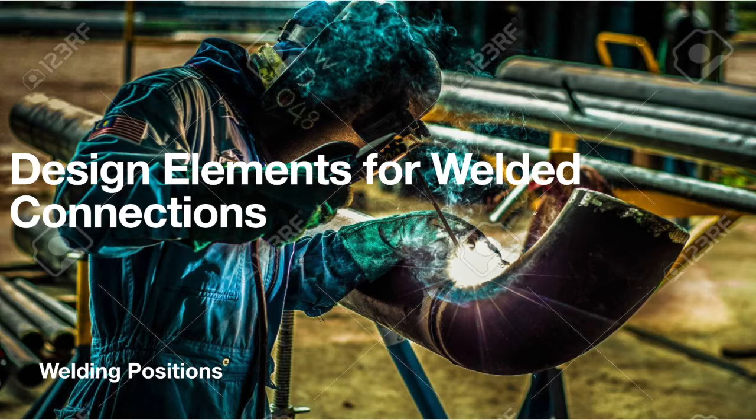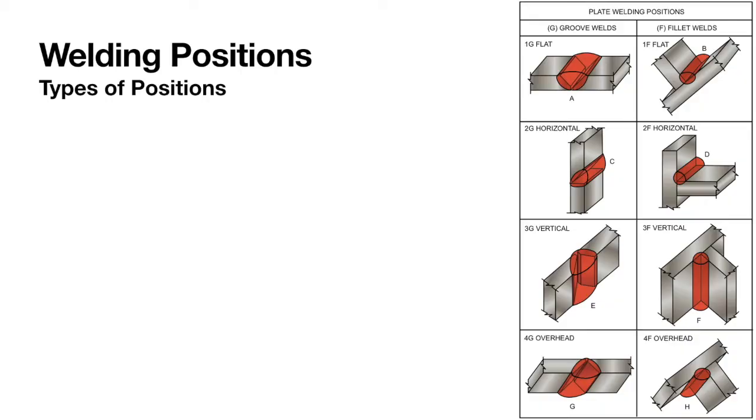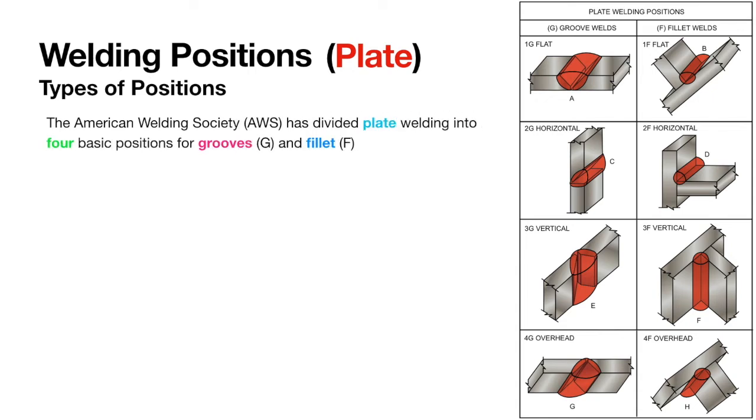This is why we take into consideration the welding positions of joints. Welding positions can be classified into either plate or pipe welding, whereas the plate welding is further divided into four basic positions, each for groove weld and fillet weld.